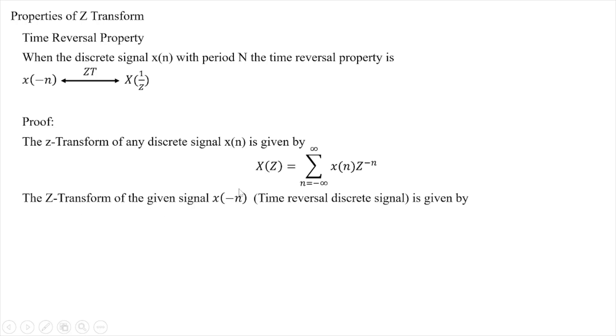The z-transform of the time reversal signal x(-n) is given by X(z) equals summation n equals minus infinity to plus infinity of x(-n)z^(-n).